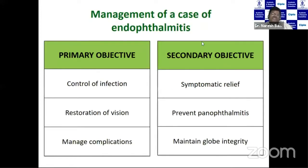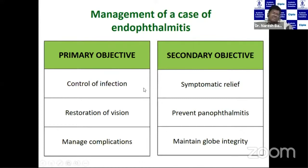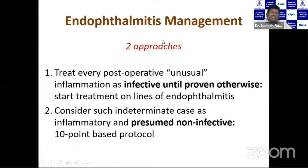The primary objective of management of endophthalmitis is to control the infection, restore vision, and manage complications. The secondary objective is to relieve symptoms, prevent panophthalmitis, and maintain globe integrity. There are two approaches: treat every post-operative unusual inflammation as infective until proven otherwise, or consider indeterminate cases as inflammatory and presumed non-infective based on protocol.